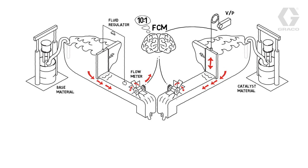The catalyst flow meter sends information back to the FCM, which confirms the ratio is correct. The system checks and fine-tunes the ratio many times per second.